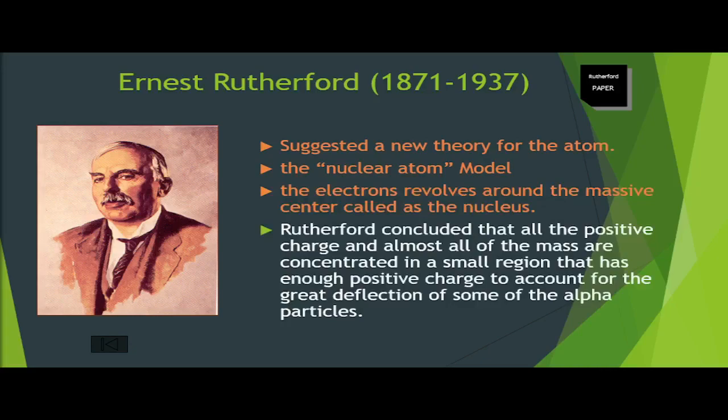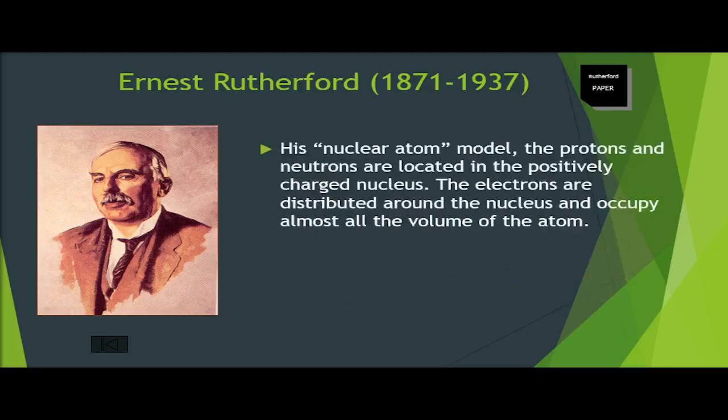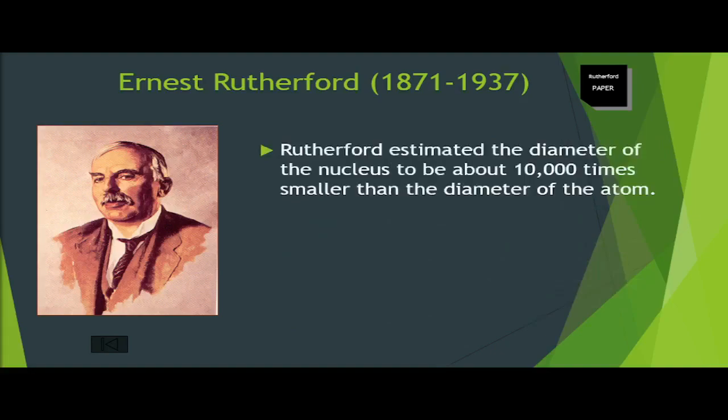Rutherford concluded that all the positive charge and almost all of the mass are concentrated in a small region that has enough positive charge to account for the great deflection of some of the alpha particles. His nuclear atom model: the protons and neutrons are located in the positively charged nucleus; the electrons are distributed around the nucleus and occupy almost all the volume of the atom. According to this model, the nucleus is tiny and densely packed compared with the atom as a whole. If an atom were the size of a football stadium, the nucleus would be about the size of a marble. Rutherford estimated the diameter of the nucleus to be about 10,000 times smaller than the diameter of the atom.